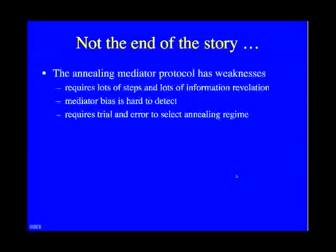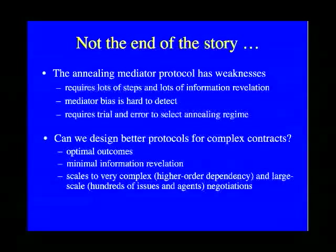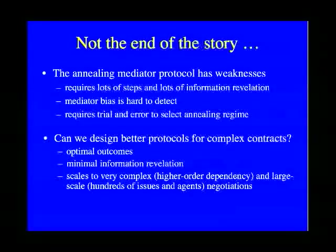The annealing mediator protocol has weaknesses: it requires many steps to find win-win outcomes, thus requiring agents to reveal a lot of information about their utility functions. Mediator bias — in terms of whether it ignores more no-votes from one agent or another — can be hard to detect, and the protocol requires trial and error to select the right annealing regime, meaning the right number of no-votes to ignore and on what schedule over time. It is therefore important to design better protocols that produce optimal outcomes, minimize utility information revealed, and scale to very complex, large-scale problems with hundreds of issues, many agents, and higher-order dependencies between issues.